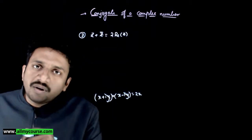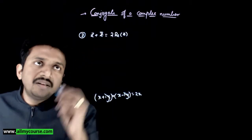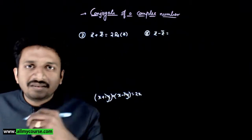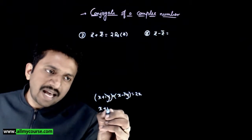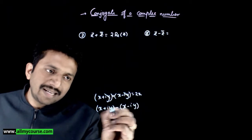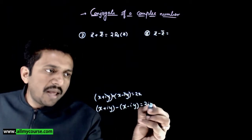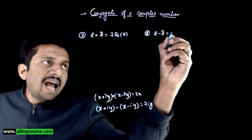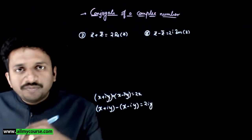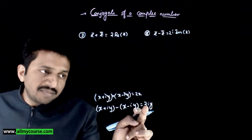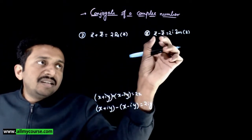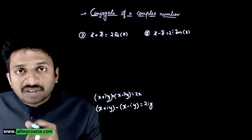Next, what is z minus z bar? If you subtract z bar from z — (x plus iy) minus (x minus iy) — the x terms cancel and you get 2iy, that is 2i times the imaginary part of z. So z plus z bar equals 2 times Re(z), and z minus z bar equals 2i times Im(z).